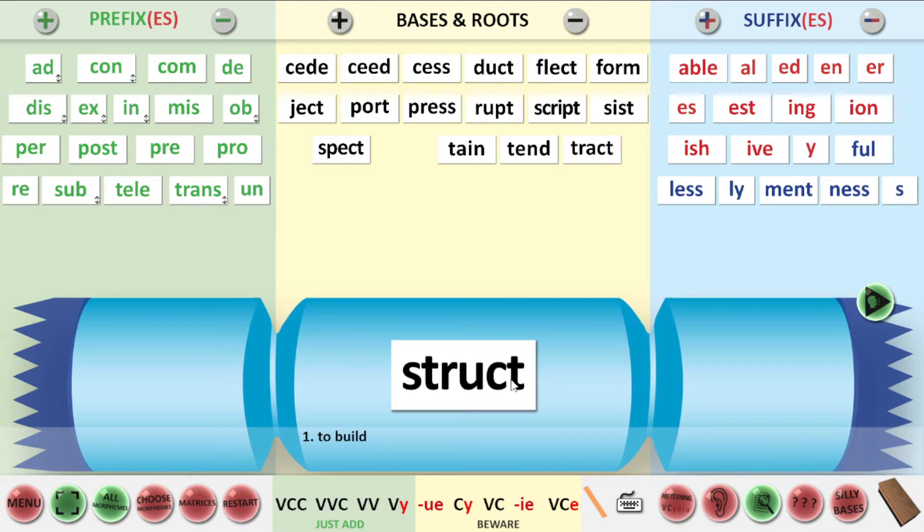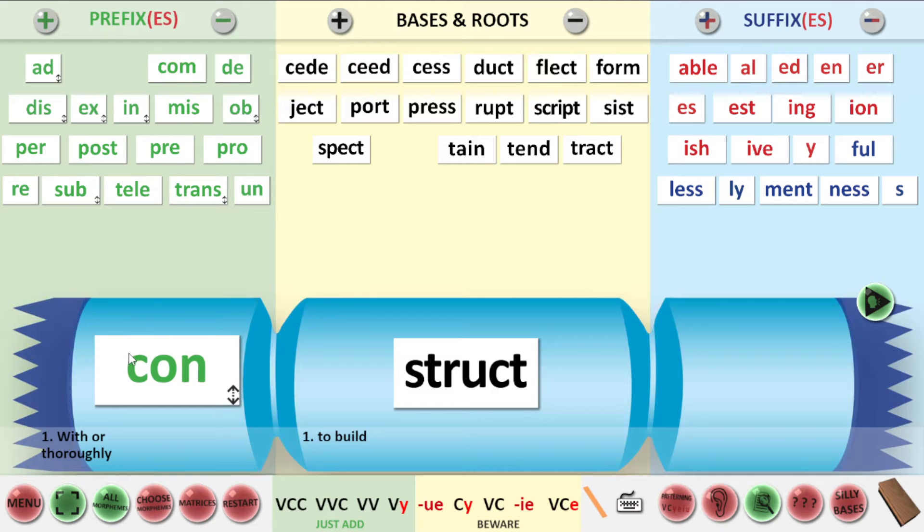So if I asked you to build me a word, which means to build thoroughly or with, you would hear the word build, and you'd bring down struct. Then you'd think thoroughly or with. Is there an affix? And you would go for the prefixes here, thoroughly or with. Oh, here we go. We would make construct. There's our meaning, with or thoroughly, and struct means to build. So if I asked you to build a word that said to build thoroughly or with, you would make construct.